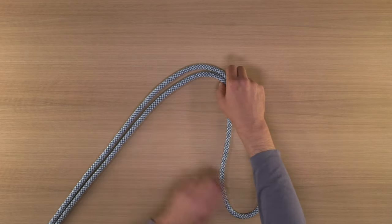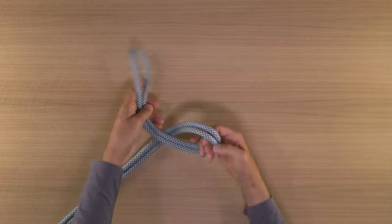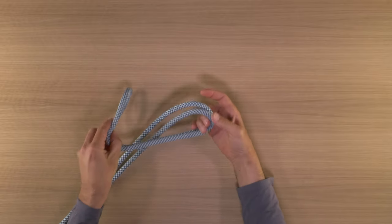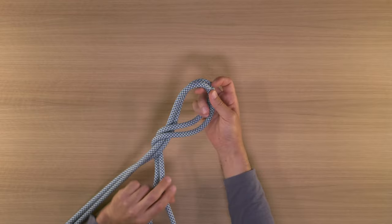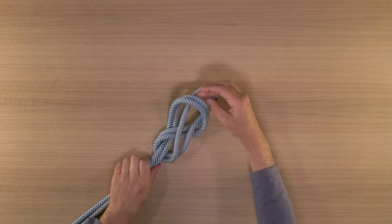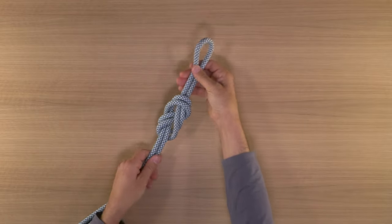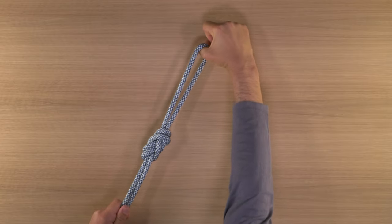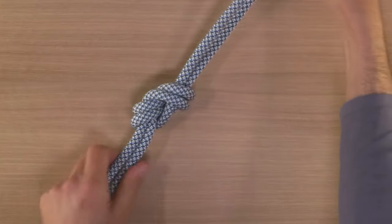For a figure eight on a bight, you take the end of the bight, pass it around the back. Instead of going through the loop, as you would for an overhand, you go around one more half-turn, and then through the front of the loop, and as always, dress your knot neatly. This is a little easier to untie after being weighted than the overhand is.